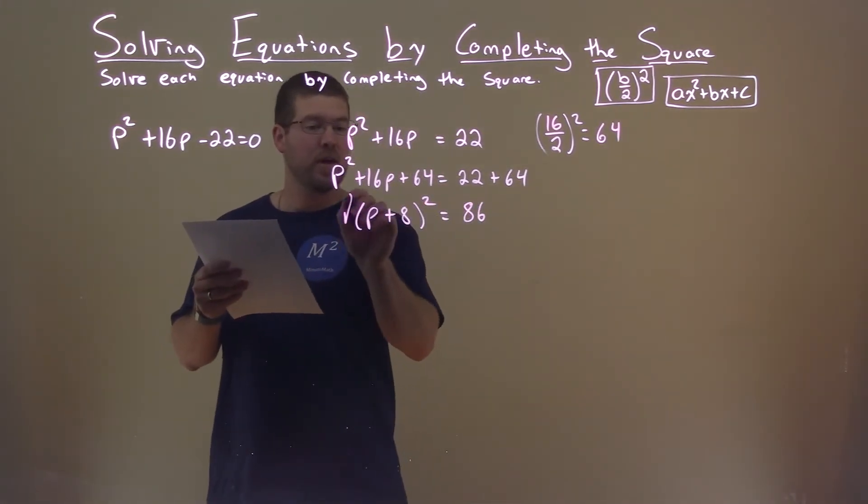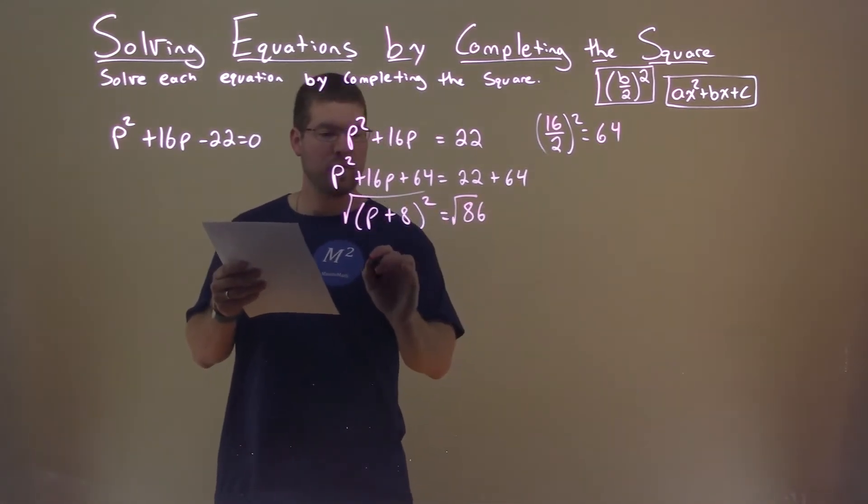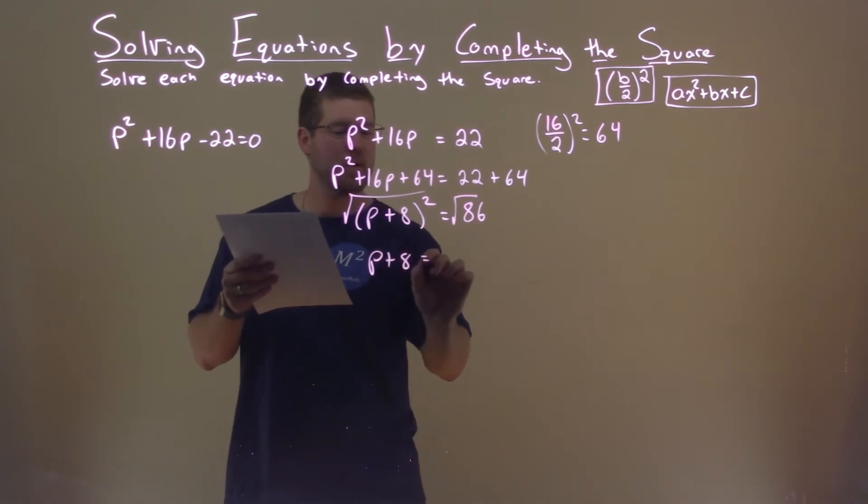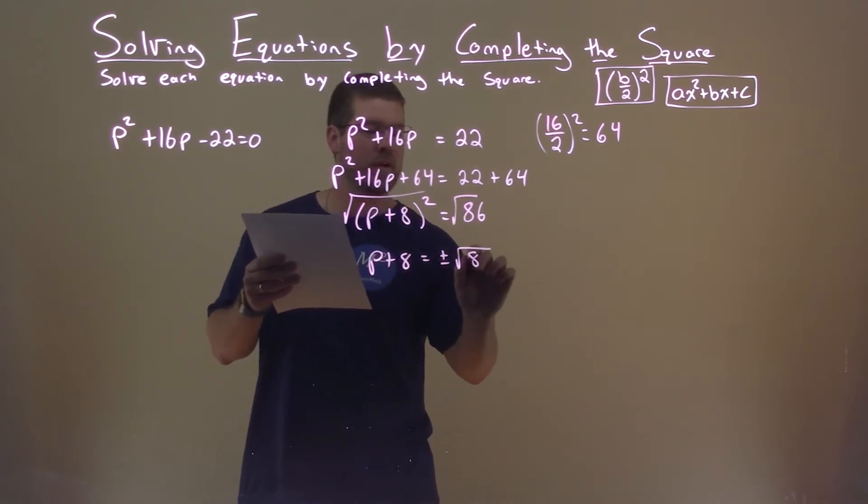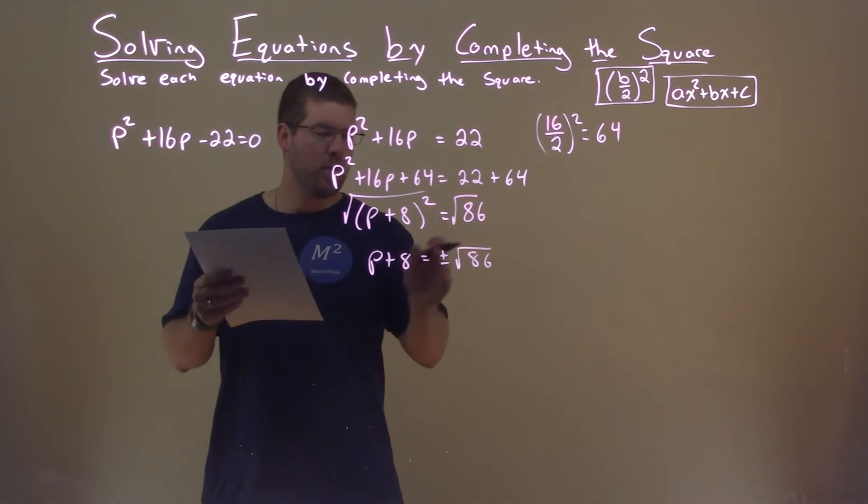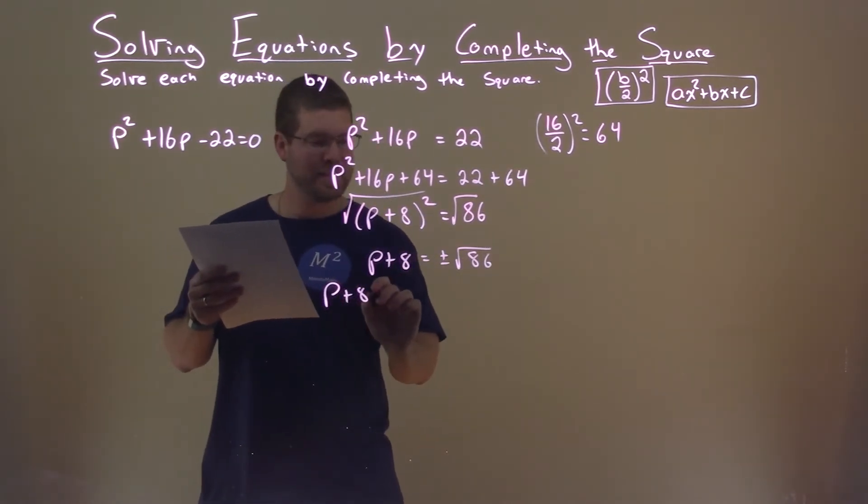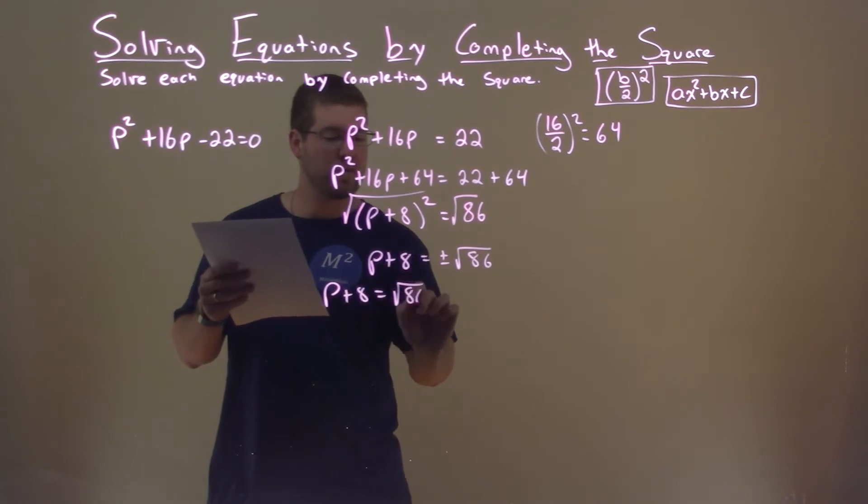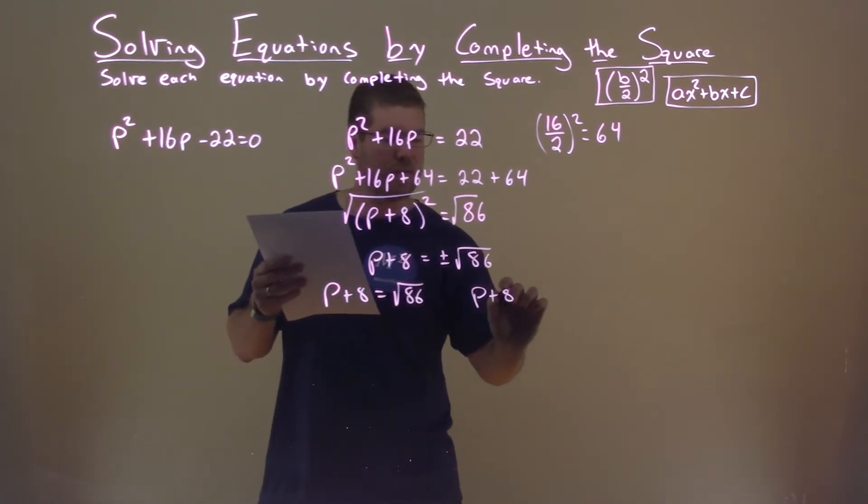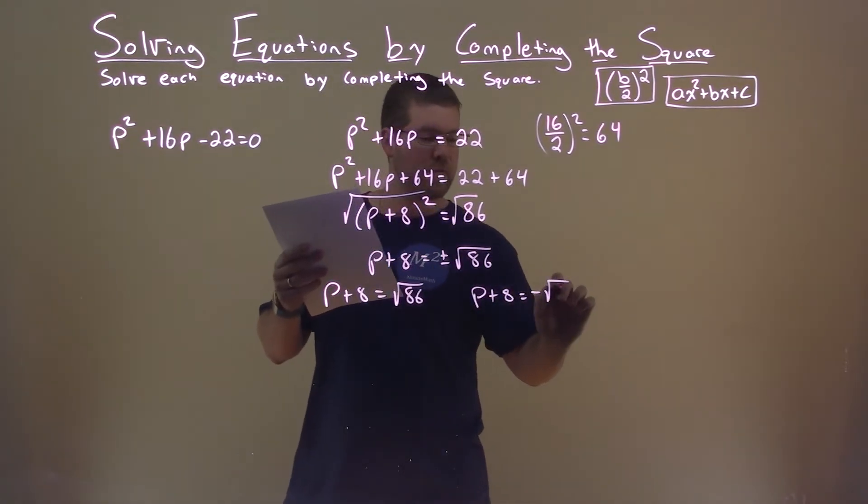We now have to take the square root of both sides, and we're left with p plus 8 equals plus or minus the square root of 86. We can break that down now to two equations, p plus 8 equals a positive square root of 86, and p plus 8 equals a negative square root of 86.